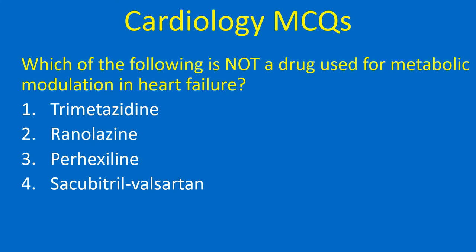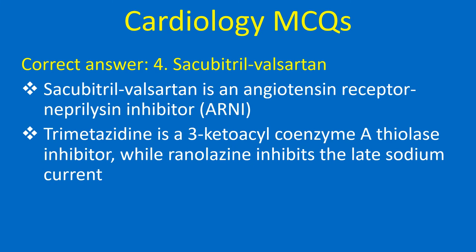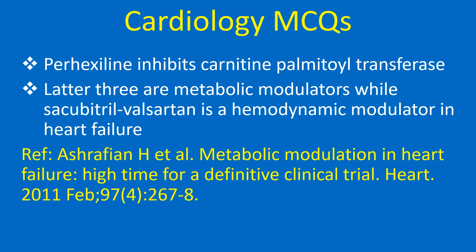Which of the following is not a drug used for metabolic modulation in heart failure? 1. Trimetazidine, 2. Ranolazine, 3. Perhexiline, 4. Sacubitril-Valsartan. Correct answer: 4. Sacubitril-Valsartan. Sacubitril-Valsartan is an angiotensin receptor neprilysin inhibitor — a hemodynamic modulator. Trimetazidine is a 3-ketoacyl-coenzyme A thiolase inhibitor. Ranolazine inhibits the late sodium current. Perhexiline inhibits carnitine palmitoyltransferase. The latter three are metabolic modulators.